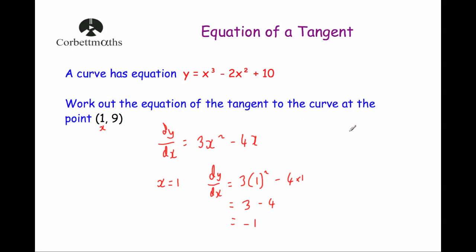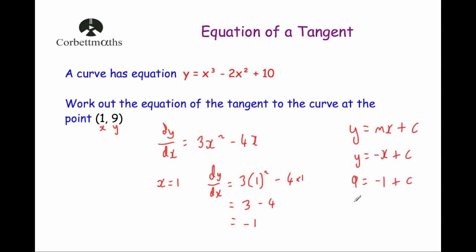Now we want to find the equation of the tangent — that's a straight line, so y equals mx plus c — and we know the gradient is negative 1. So I'm going to write y equals minus x plus c. To find the plus c, we substitute in the point (1, 9): so 9 equals minus 1 plus c. Adding 1 to both sides gives us 10 equals c, so c equals 10. Putting that back in gives us y equals minus x plus 10. So the equation of the tangent to the curve at the point (1, 9) is y equals minus x plus 10.